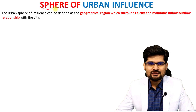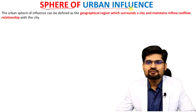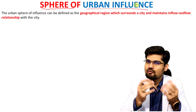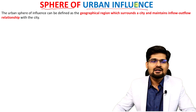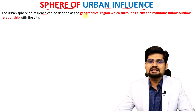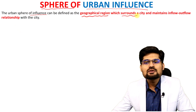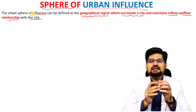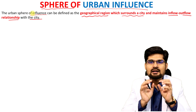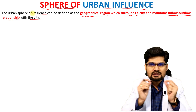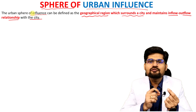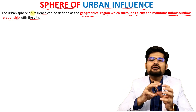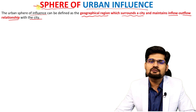Let's discuss this concept of the sphere of urban influence. The word here is 'influence' — it means the impact over the surroundings, specifically the urban impact. The urban sphere of influence is the geographical region which surrounds a city and maintains an inflow-outflow relationship with the city. This region is known as the urban influence region or the sphere of urban influence.